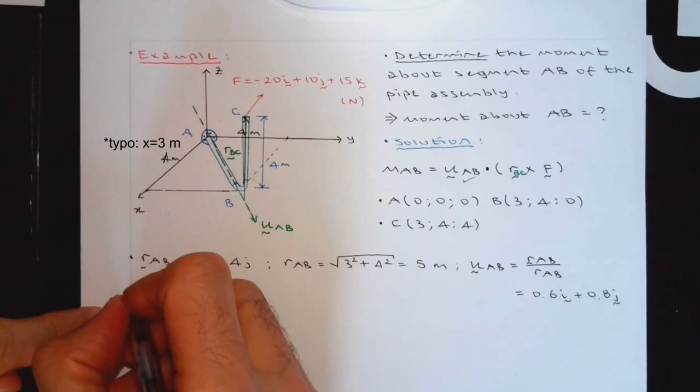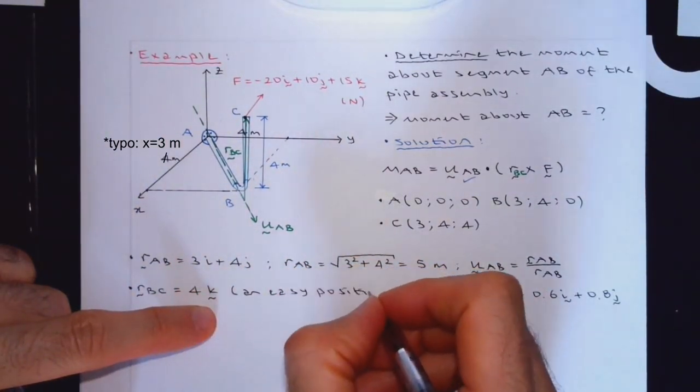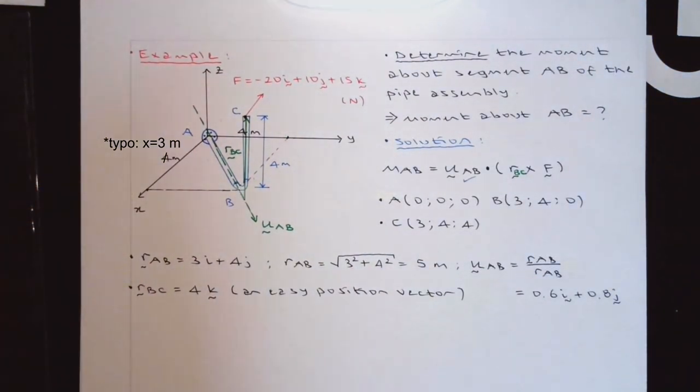The next is the easy position vector from B to C. It's just going to be 4k. An easy position vector. All right. So we are ready.